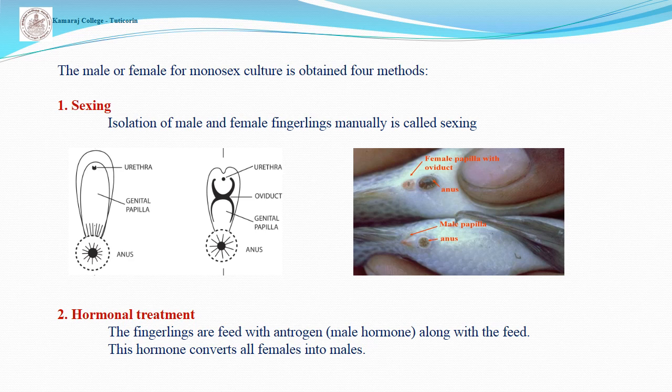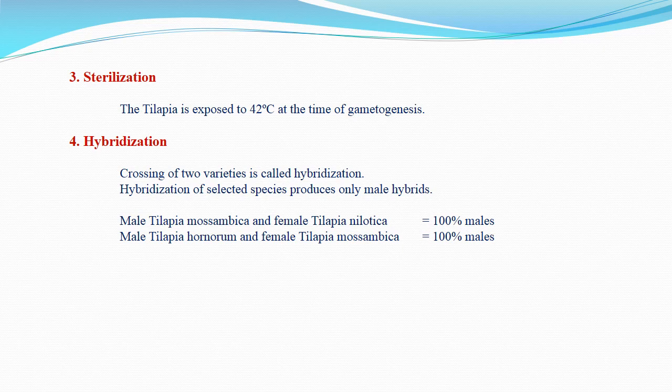The second method is hormonal treatment, where fingerlings are fed with androgen along with their feed. This hormone converts all females into males. The third method is sterilization: tilapia is exposed to 42 degrees Celsius, and this temperature shock induces triploidy and polyploidy in the eggs, so the eggs cannot be fertilized by sperm, thereby stopping overpopulation.